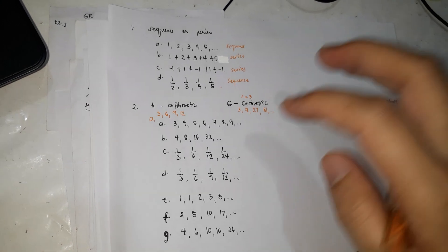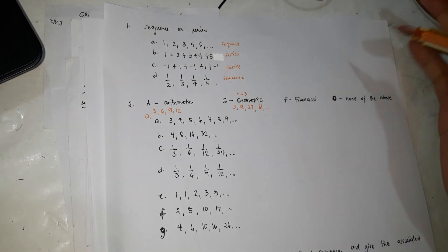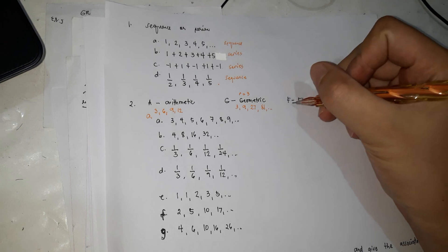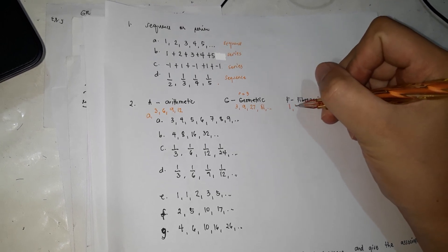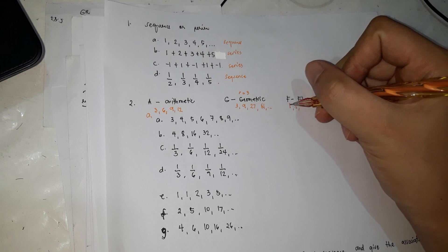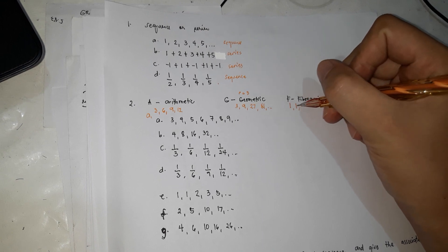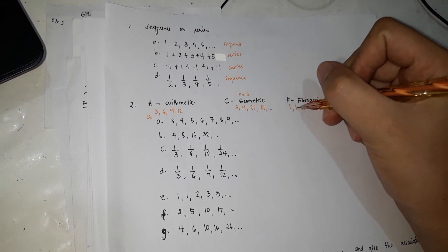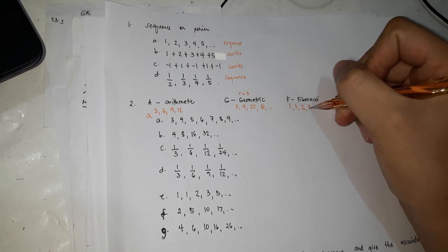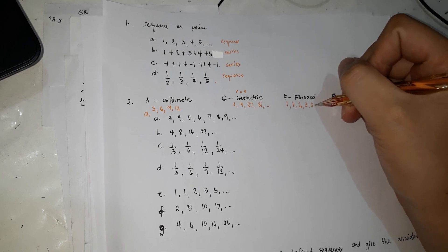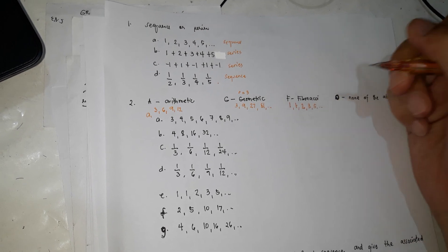Fibonacci sequences are sequences where you add the previous two terms to get the next one. For example: 1, 1 — then 1 plus 1 is 2, 1 plus 2 is 3, 2 plus 3 is 5. That's how you get a Fibonacci sequence.